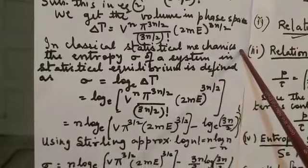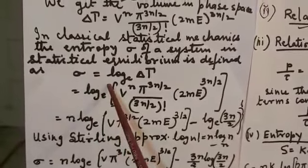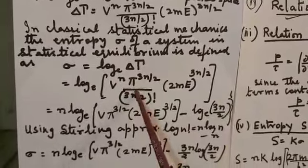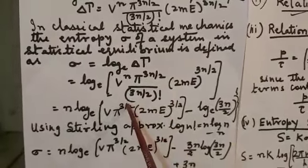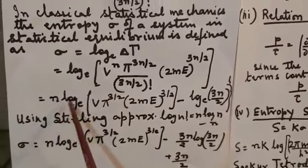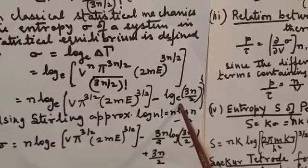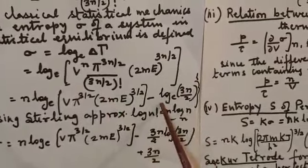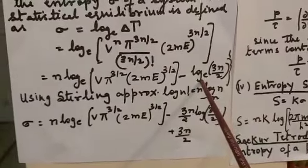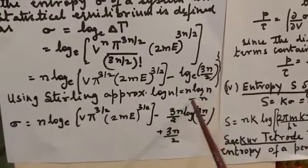In classical statistical mechanics, entropy sigma of a system in statistical equilibrium is defined as sigma = log(delta tau). So sigma = log of [V^N * pi^(3N/2) / (3N/2)! * (2mE)^(3N/2)]. Opening this out: sigma = N log(V * pi^(3/2) * (2mE/N)^(3/2)) minus log(3N/2)!. Now applying Stirling's approximation: log(N!) = N log N minus N.